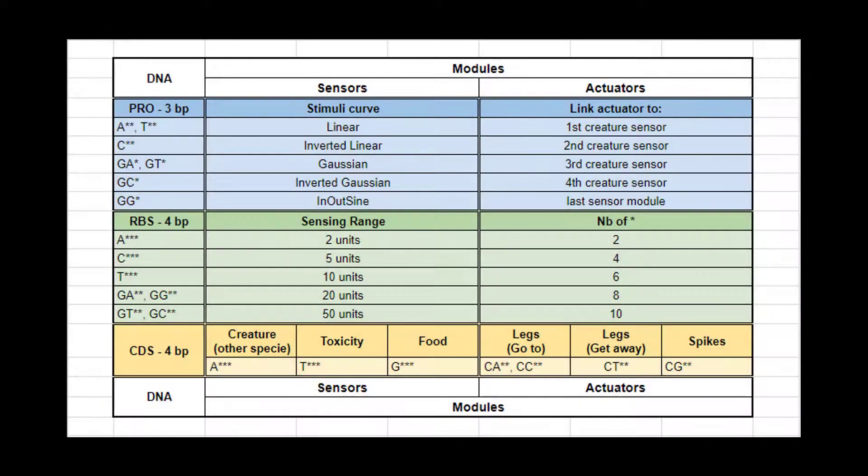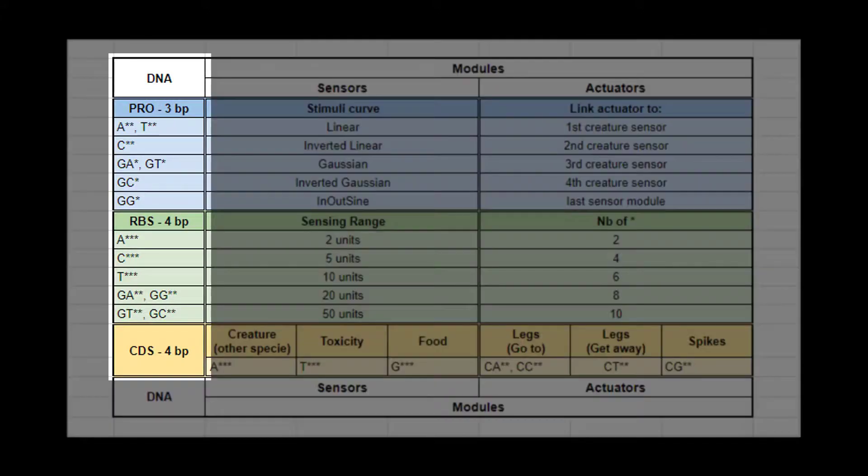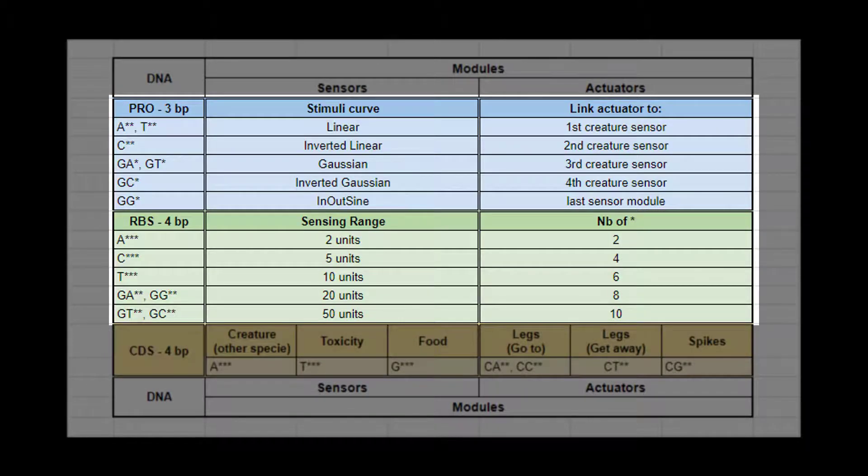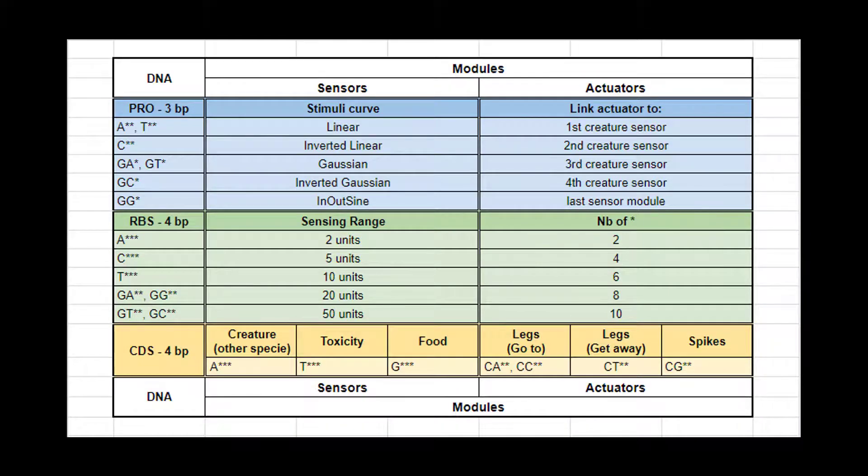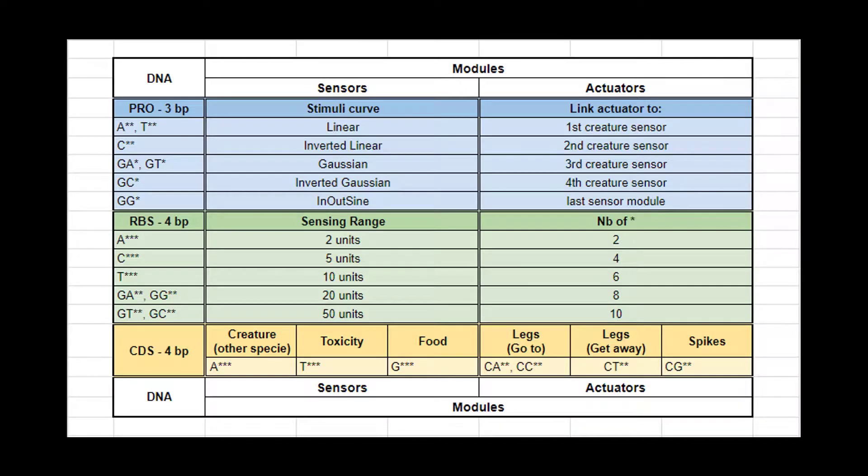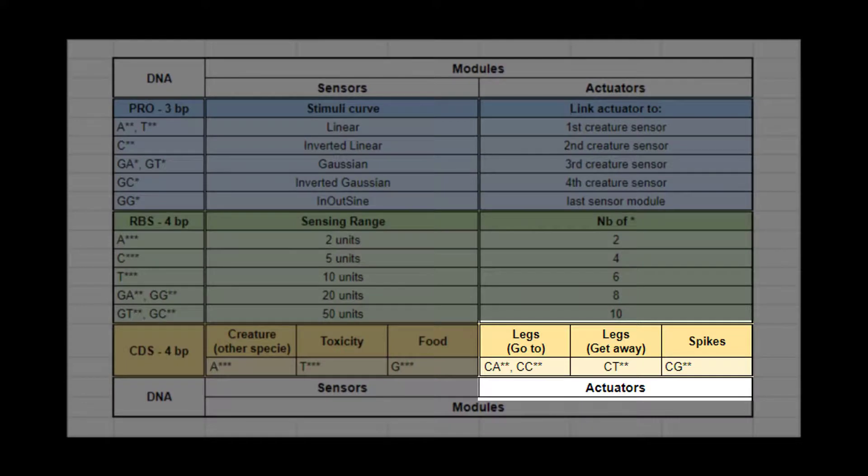So, how does it work? Each creature module is made of 11 ATCJ base pairs. The last four are used to determine what type of module it will be, and the first eight are parameters that are used to add more complexity and possibilities. There are two main types of modules: sensors that are triggered by some objects and then send information to any actuator that is listening to the sensor, and actuators that do things like moving or extending spikes, but only when its connected sensor is triggered.